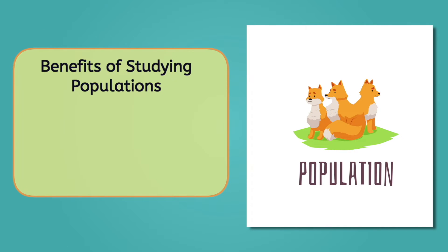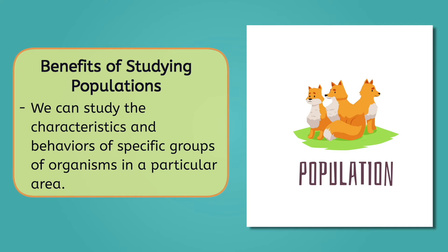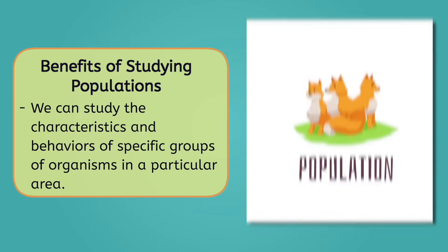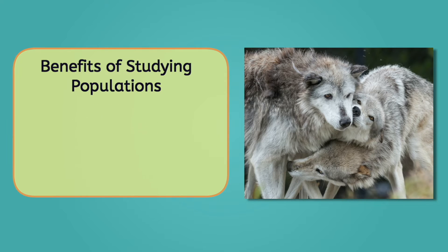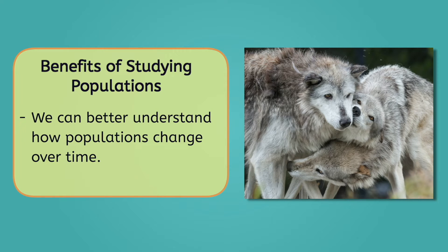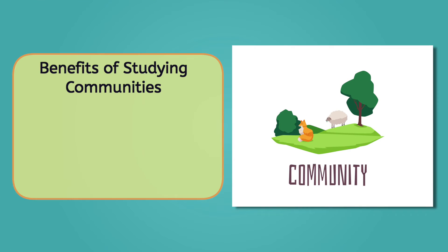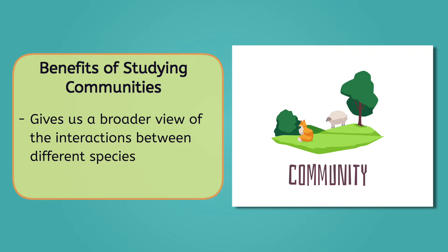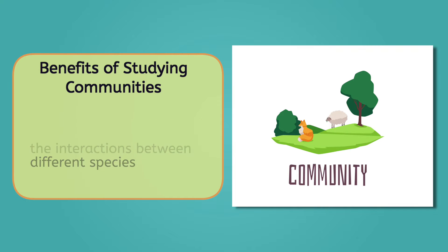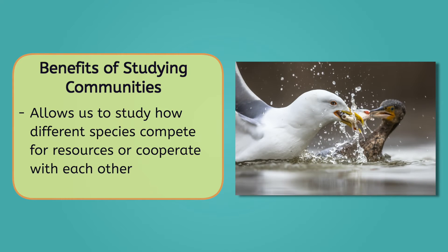We just went all the way from cells to every living thing in their environment. This organization of living things is important. By categorizing species into populations, we can study the characteristics and behaviors of specific groups of organisms in a particular area, like a group of wolves in Yellowstone National Park. This helps us understand how these populations change over time. Studying communities — or groups of interacting populations — gives us a broader view of the interactions between different species, such as how they compete for resources like food and habitat, or how they cooperate with each other.